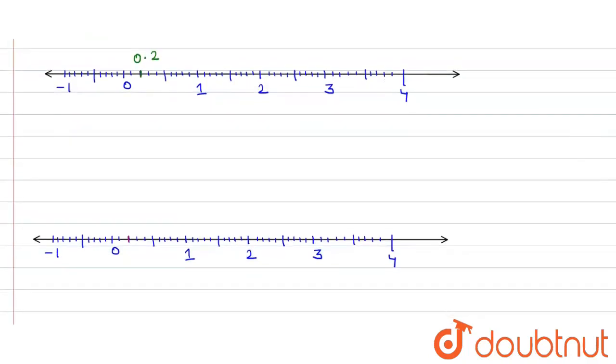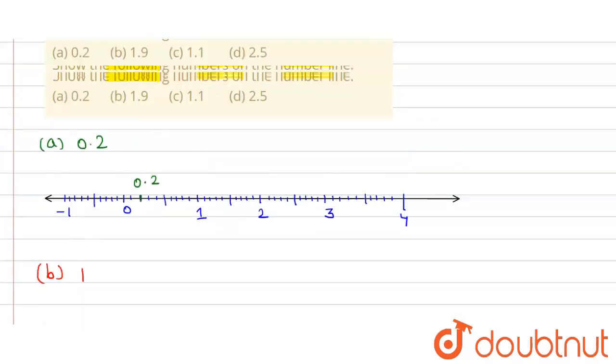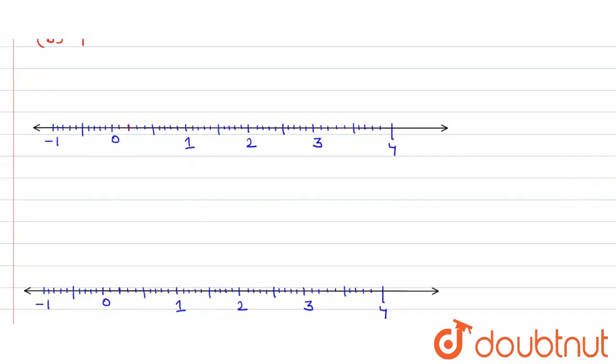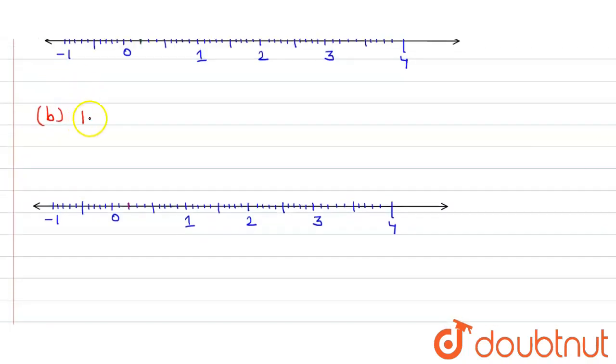Similarly, the second point is 1.9. This number will be between 1 and 2. Here it will be 1, 1.1, 1.2, and similarly, here we get 1.9. So that's our representation of 1.9 on the number line.